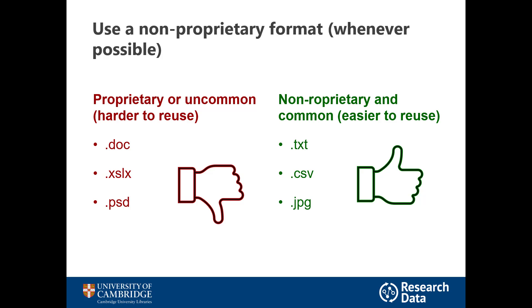It's good to use non-proprietary data formats wherever possible. Sometimes instruments require you to use a particular format and that's absolutely fine. But if you have the choice, for example for a text file, you should use a text format rather than a Word document format. That way, somebody doesn't have to purchase the Windows software to open it. Likewise, comma-delimited files are better than Excel files. JPEG files are better than Adobe files and so on.